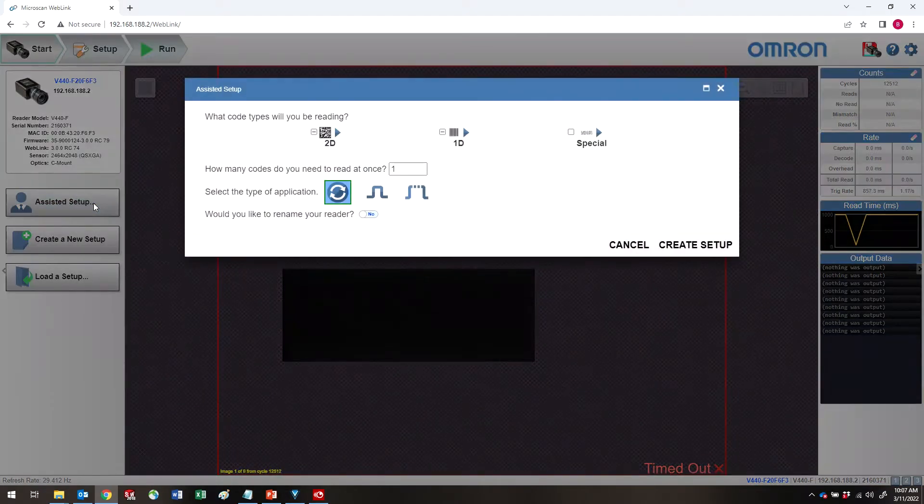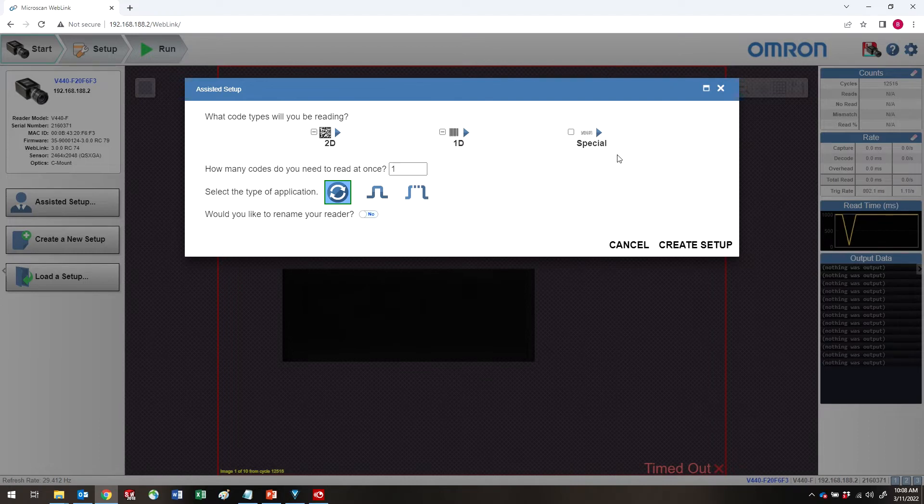Once the camera interface loads, select Assisted Setup. The most common codes are already selected. You can change these selections if you want. You also specify how many codes you want to read and the type of trigger. There's continuous trigger, triggered and start stop. You can also change the name of your reader. When you're done, click Create Setup.